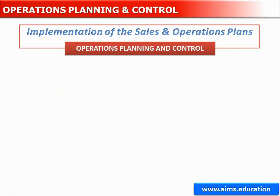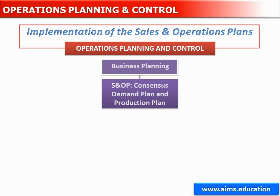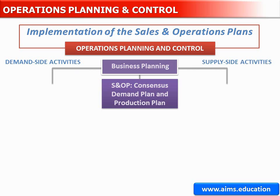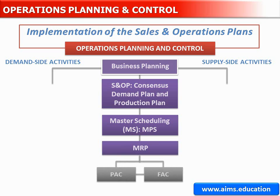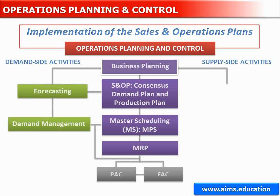This exhibit provides an overview of how business planning, based on organisational strategy, is used to develop a consensus demand plan and a production plan in sales and operations planning, based on inputs from the demand and supply sides of the organisation — the left and right columns. The centre column below sales and operations planning shows the supply side outputs. The production plan, based on a consensus demand plan, is developed to guide master scheduling, which produces a master production schedule, and plans for the necessary raw materials in material requirements planning, and for controlling production and scheduling assembly. The high-level demand side activities include forecasting and demand management.